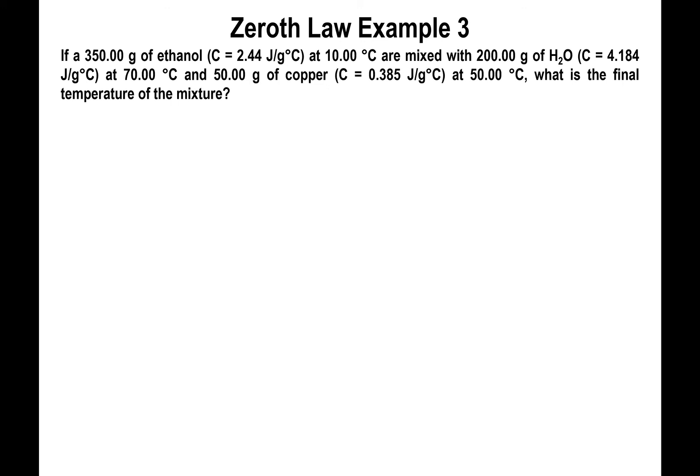Okay, so we have one more problem to do revolving around the Zeroth Law of Thermodynamics. As I said, it's a little more convoluted. Here we have 350 grams of ethanol with a heat capacity of 2.44 joules per gram degrees Celsius being held at 10 degrees Celsius. So that's the initial temperature of ethanol.